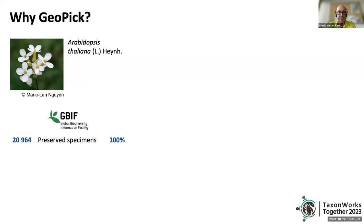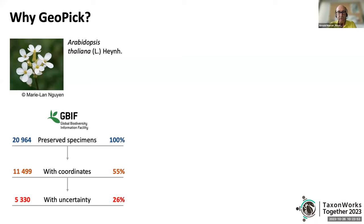We go and visit the GBIF data portal and are happy to see that there are close to 21,000 records of preserved specimens. However, our initial excitement is lowered when we discover that only about half of them have coordinates. We proceed to download them, but feel further disappointed when we realize that only half have their uncertainty documented.